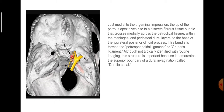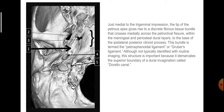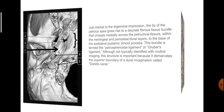Just medial to the trigeminal impression, the tip of the petrous apex gives rise to a discrete fibrous tissue bundle that crosses medially across the petroclival fissure within the meningeal and periosteal dural layers to the base of the ipsilateral posterior clinoid process. This bundle is termed the petrosphenoid ligament, also called Gruber's ligament. Although not typically identified with routine imaging, this structure is important because it demarcates the superior boundary of a dural invagination called Dorello's canal.